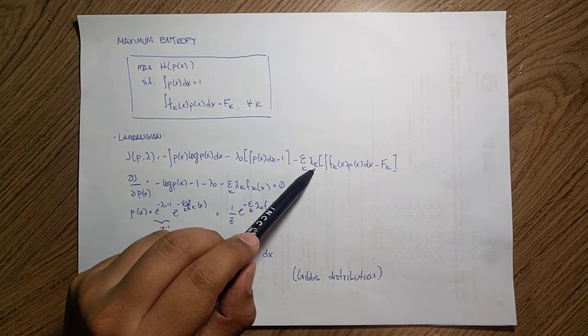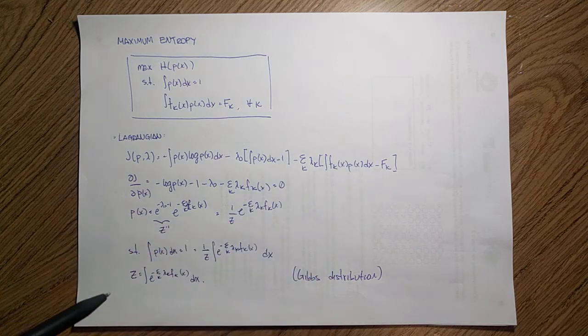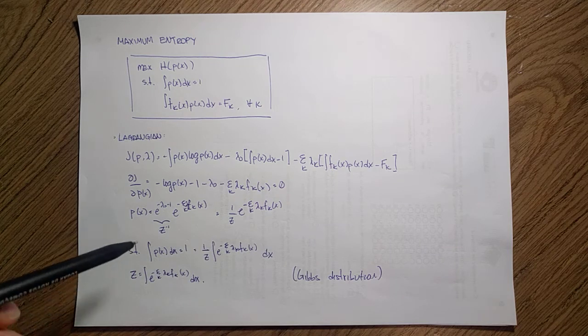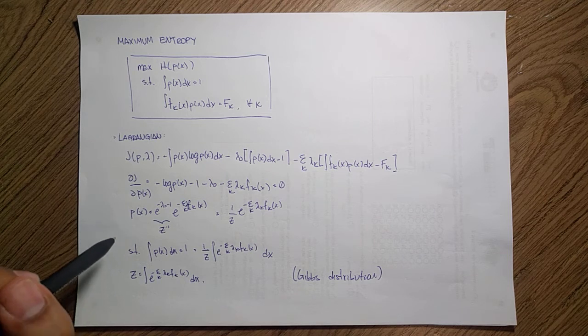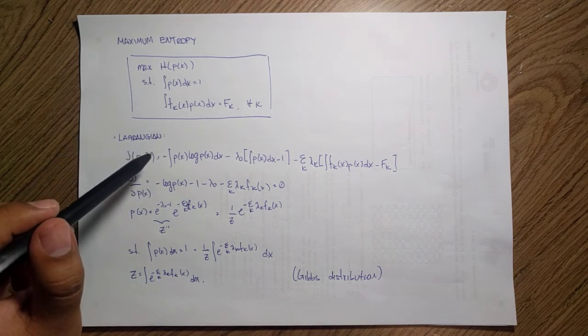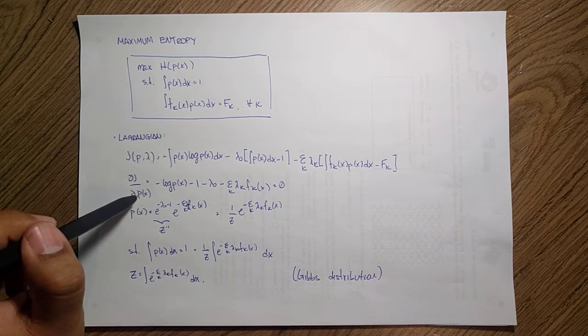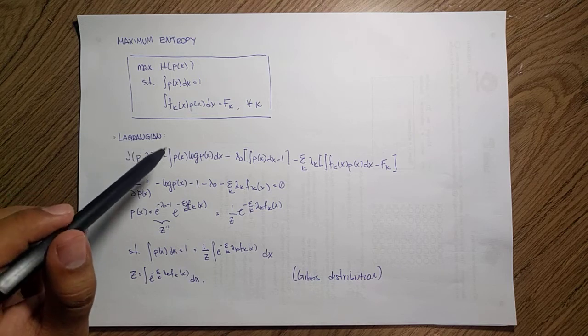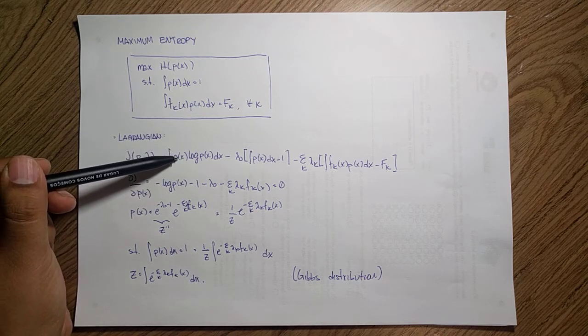Then we want to compute the derivative of this thing with respect to p(x) and we use calculus of variation for that. Similarly as before, since this holds we can just compute the integral of the derivative of what is inside of the integral. So we end up with the derivative of this.